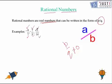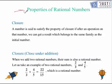It could be negative as well. Now we move ahead and we are going to learn about the closure property of rational numbers. A number is said to satisfy the property of closure if, after an operation on that number, we get a result which belongs to the same set — the same family — as the initial number. So if our initial number is a rational number, the answer we get after the operation should also be a rational number. Then we can say that it satisfies the property of closure.